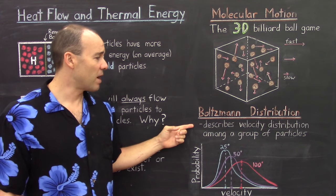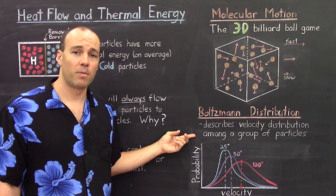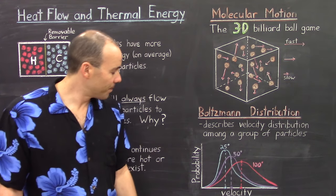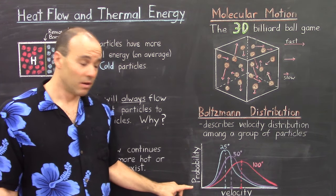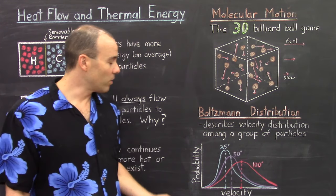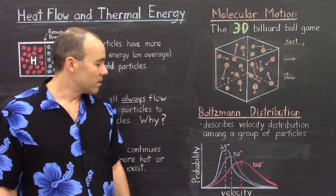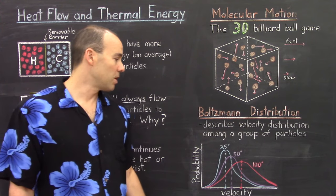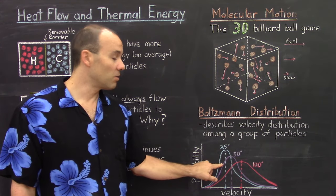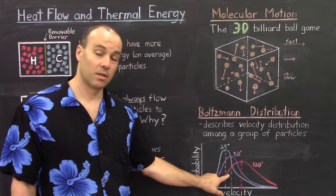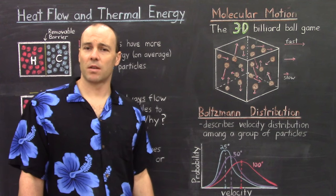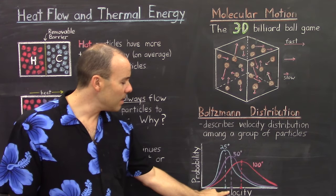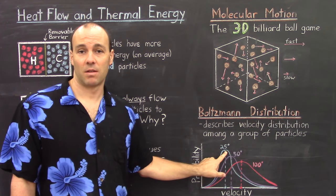The Boltzmann distribution describes the velocity distribution among really any group of particles, and it's explained through the following graph. This graph plots the probability versus the particle velocity. There are three temperatures listed here on this graph. Suppose you have a group of particles at 25 degrees Celsius, 50 degrees Celsius, and 100 degrees Celsius. At 25 degrees Celsius, the particles are not moving around as quickly on average, and this peak represents the average.